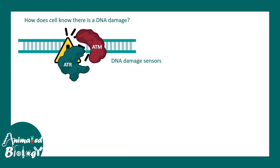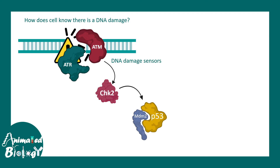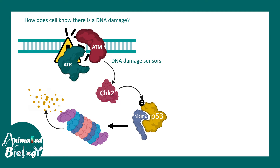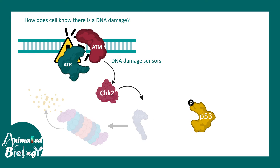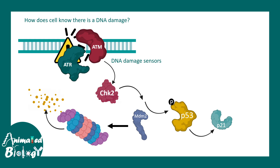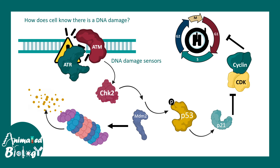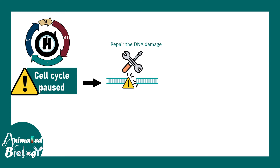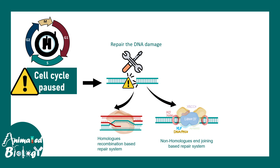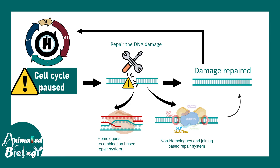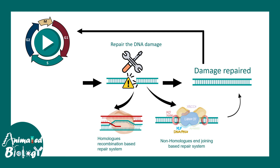Specific sensors known as ATM and ATR bind to and sense DNA damage. Through downstream signaling involving CHK2, P53 gets activated. Normally P53 is degraded, but when CHK2 phosphorylates it, P53 is activated and can activate P21, which is a negative regulator of cyclin-CDK activity. When P21 blocks cyclin-CDK activity, the cell cycle is paused, giving DNA repair machinery enough time to repair the damage via homologous recombination or non-homologous end joining. If the damage is repaired, the cell cycle resumes.